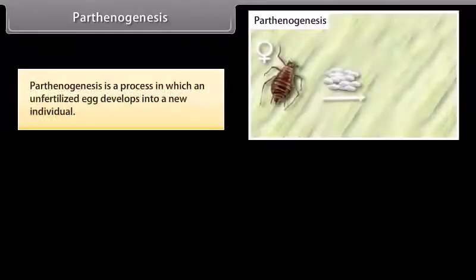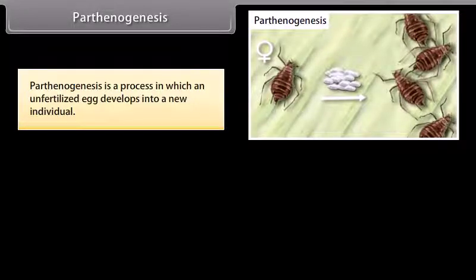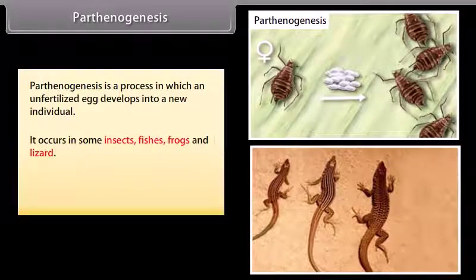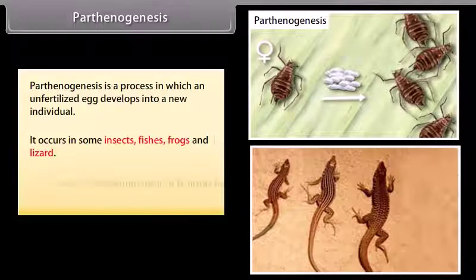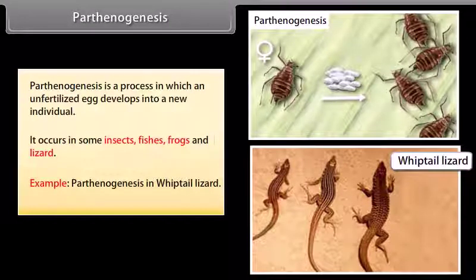Parthenogenesis is a process in which an unfertilized egg develops into a new individual. It occurs in some insects, fishes, frogs and lizards. Example: parthenogenesis in whiptail lizard.